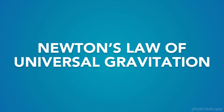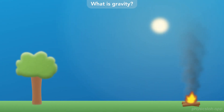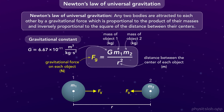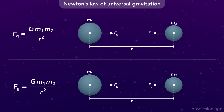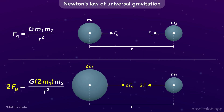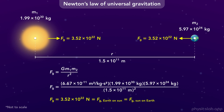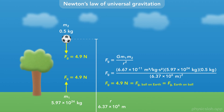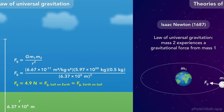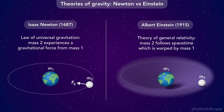Hey everyone. In this video, we're going to learn about Newton's Law of Universal Gravitation. We'll start by answering the question: what is gravity, and how did we figure it out? Then we'll explore Newton's Law of Universal Gravitation and how to use this equation. We'll see how changing the variables affects the gravitational force, walk through examples at large and small scales, and talk about the difference between Newton and Einstein's theories of gravity and which one we should use.